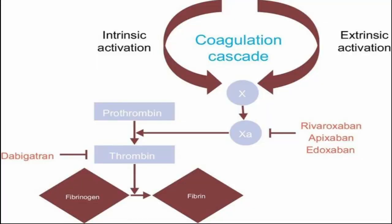Rivaroxaban, Apixaban, and Edoxaban are a trio of medications which all bind to activated factor 10. This effectively blocks the amplification of the coagulation cascade, preventing the formation of thrombus. These drugs tend to be advantageous to warfarin as they do not interact with the liver directly, and as such do not require frequent blood tests, nor are they susceptible in their mode of action due to changes in the liver's vitamin K production.